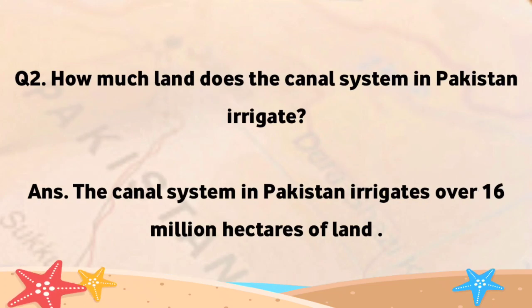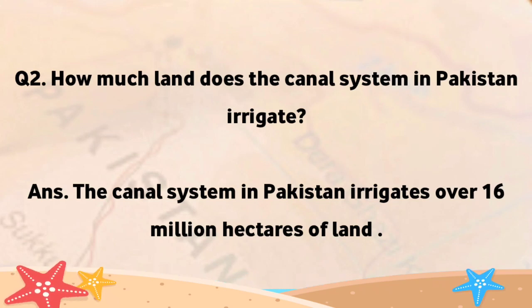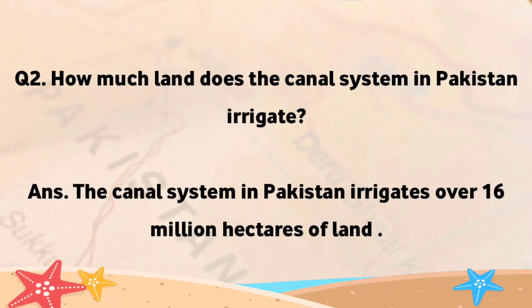How much land does the canal system in Pakistan irrigate? The canal system in Pakistan irrigates over 16 million hectares of land.